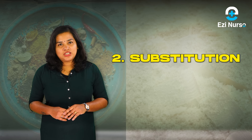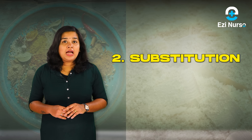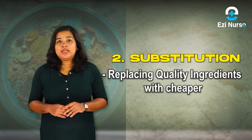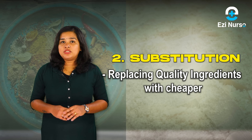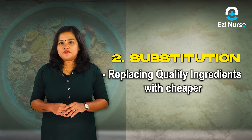The second one is substitution. Substitution occurs when high-quality ingredients are replaced with cheaper, inferior alternatives.